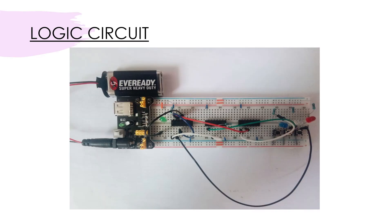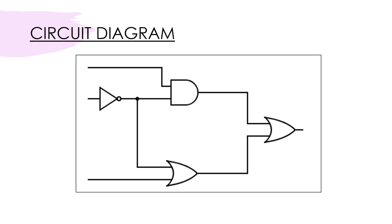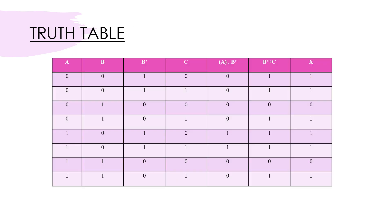This is my logic circuit and this is the circuit diagram. This is the full truth table for my circuit. Now let's prove the circuit is functioning according to this truth table.